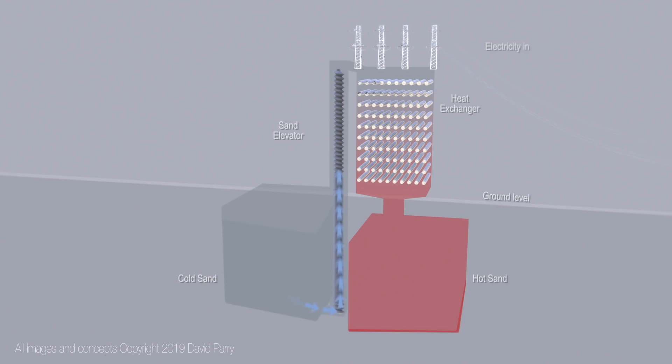Cold sand coming from a reservoir is lifted to a heat exchange tower and percolated through electrically heated refractory channels, absorbing heat sufficient to reach 600 to 1000 degrees Celsius.